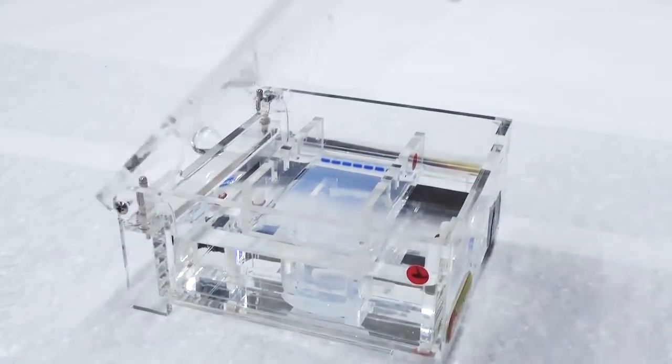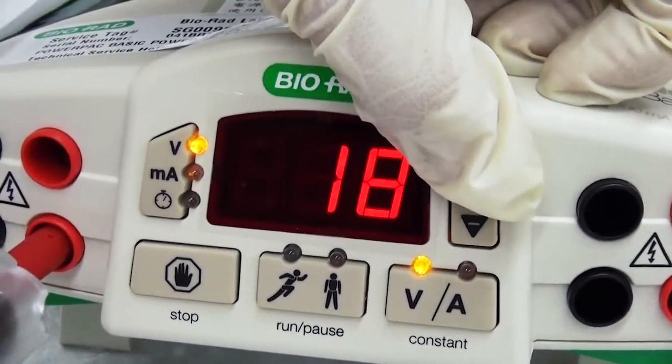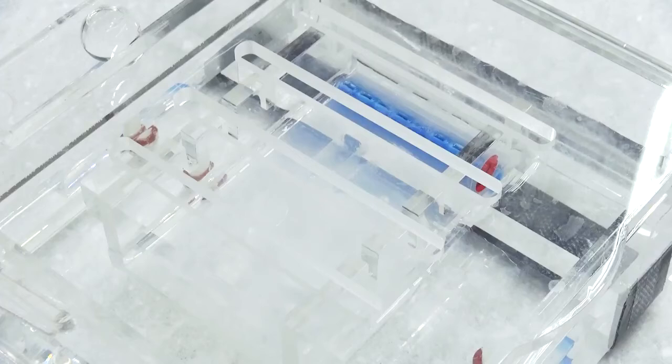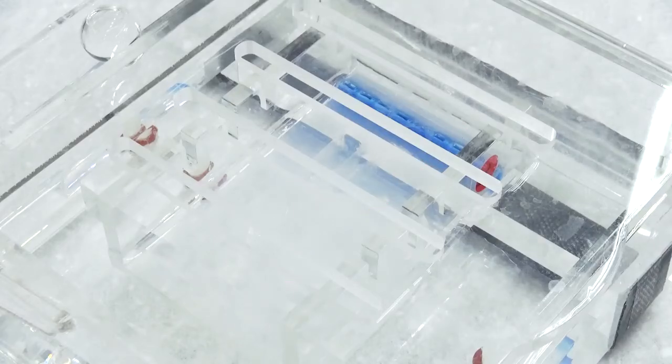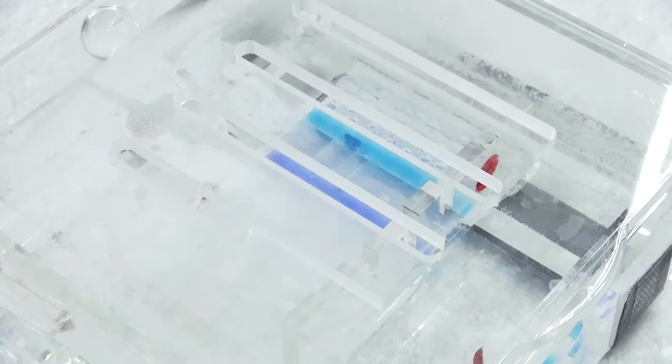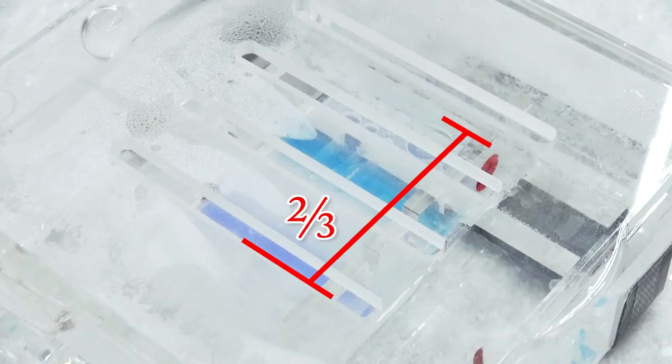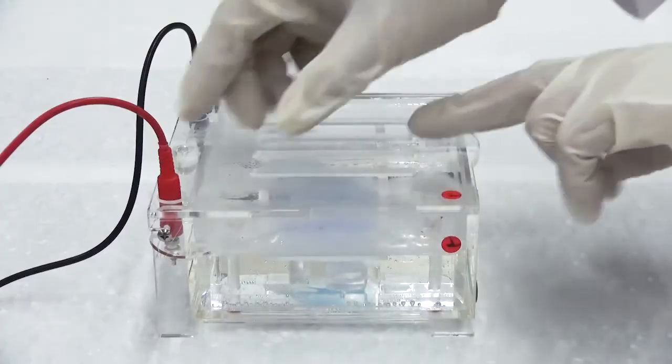Attach the lid and power cords, black to black and red to red. Set the machine to run at 100 volts. Watch for bubbles to appear around the electrode and make sure the tracking dye moves toward the positive electrode. After about an hour, when the tracking dye has moved two-thirds the distance of the gel, switch off the power and remove the power cords.